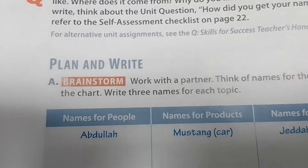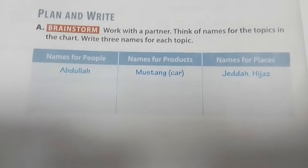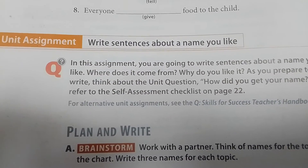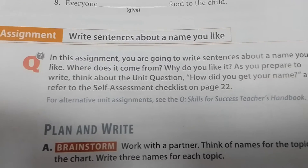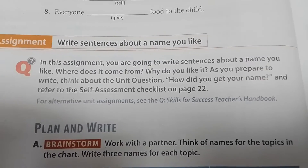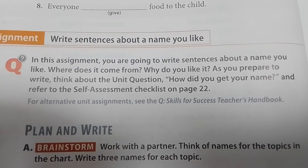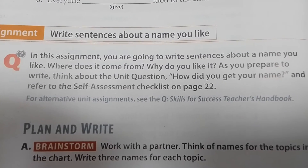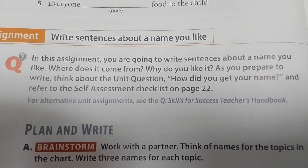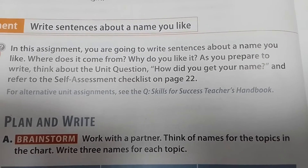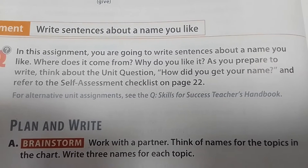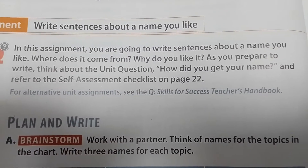The next part you have to do is write sentences. This assignment says: write sentences about a name you like. You are going to write sentences about a name you like. First, you ask: where does it come from? Second: why do you like it? As you prepare to write, think about the unit question: how did you get your name?